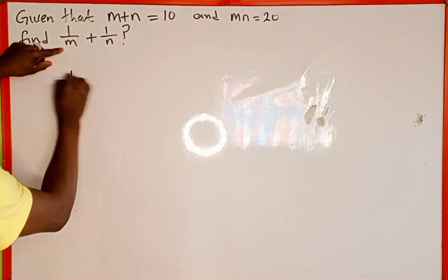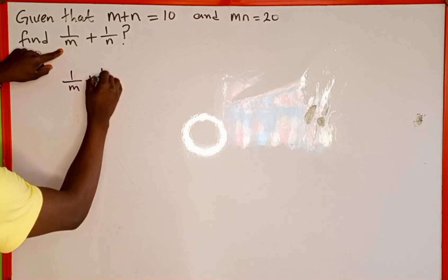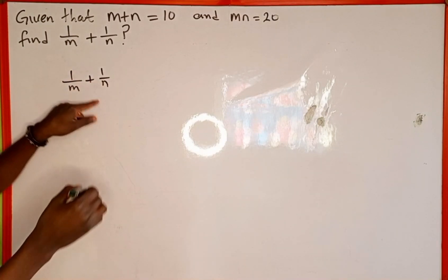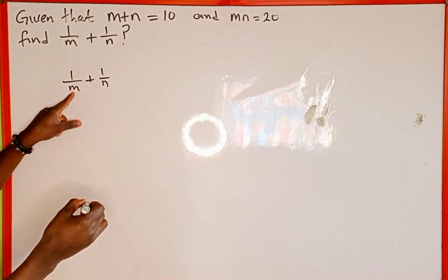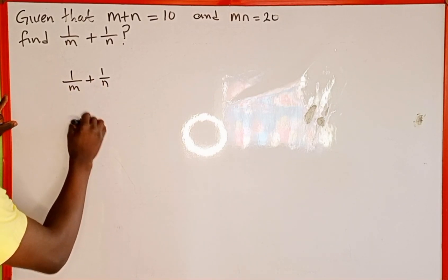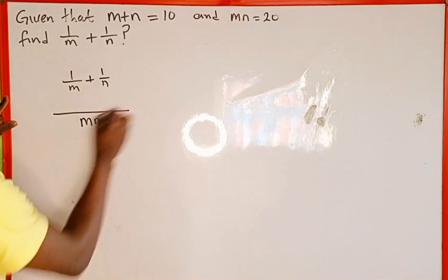So this expression, 1 over m plus 1 over n—first we simplify. What is the LCM of the denominators? The LCM of m and n is m n. Now we draw a division line.